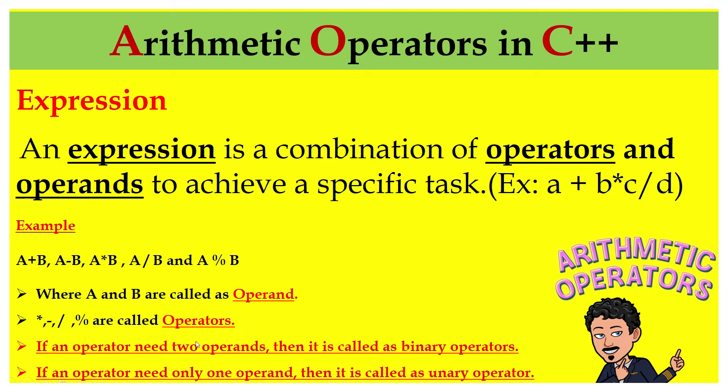On the other hand, if an operator needs only one operand, then it is called as a unary operator — 'unary' means only one number or one operand. So there are two types of arithmetic operators: one is binary operator, the other one is unary operator.